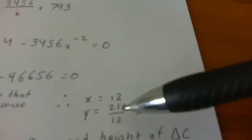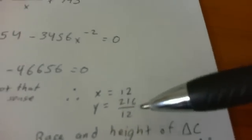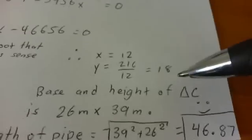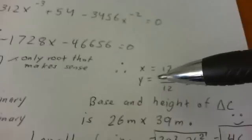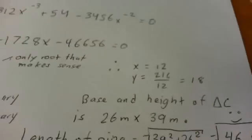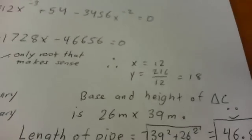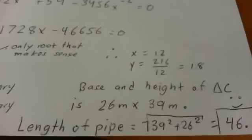So right here I have it small written. Therefore X equals 12 and Y equals 216 over 12 which is 18. So the base and length of triangle C is 26 by 39 because 12 plus 27 and 8 plus 18. So that's 26 by 39.